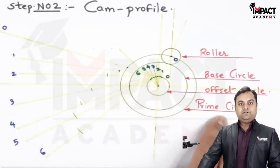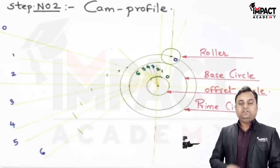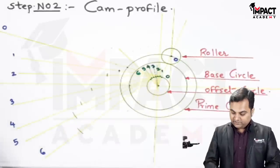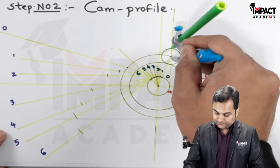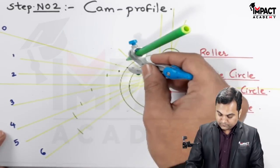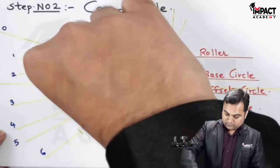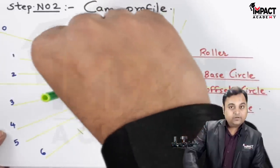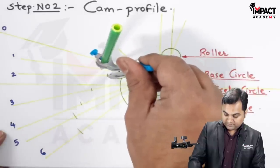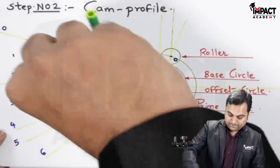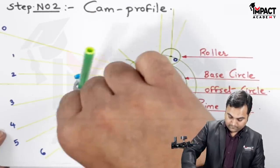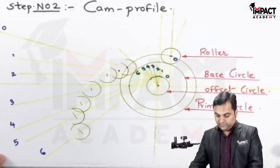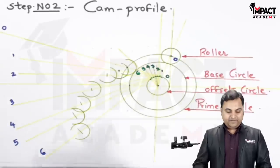Continuing — for points 3, 4, 5, and 6, marking distances from the prime circle onto the respective tangents. These marked points are the center positions of the roller as it shifts during the outstroke rotation of the cam. After getting all these centers, take the roller radius and from each center draw light circles — not complete circles, only arcs — because we require only the base of each circle for drawing base tangents.